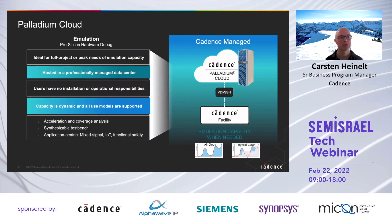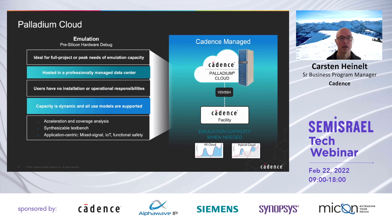Let's have a look at the Palladium Cloud. This is ideal for a full project or for peak needs of emulation capacity — it can run both. It's hosted by Cadence in a professionally managed data center. Users don't have any installation or operational responsibilities. The emulation capacity is dynamic, so when you need more capacity during a project, we can just add it for you. You can use all the models you would also have in a locally installed Palladium machine. The Palladium Cloud can also be combined with the Cloud Burst solution so that you have your design flow in Cloud Burst while still accessing the emulation in the Palladium Cloud from the same environment.